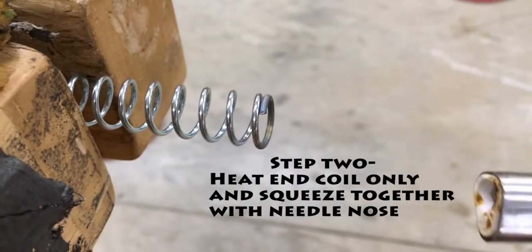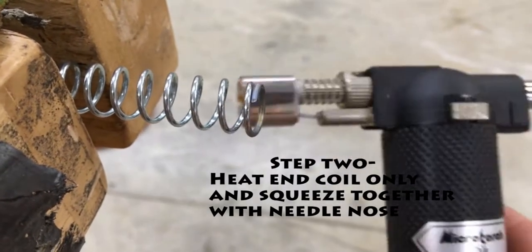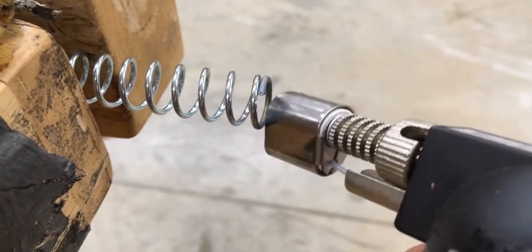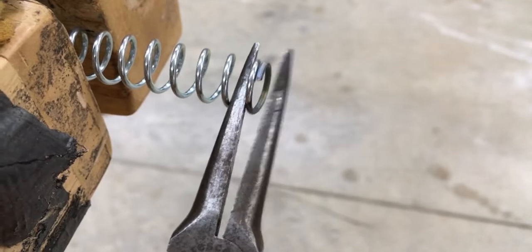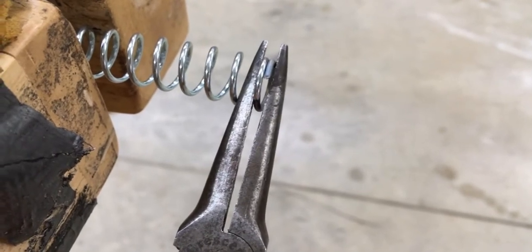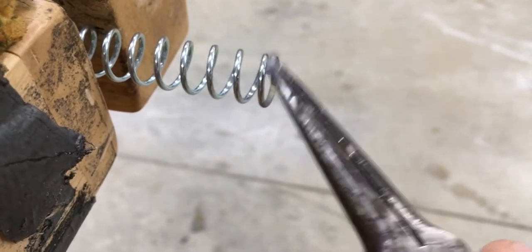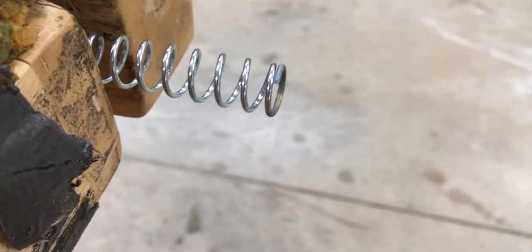It's not quite finished yet, but what I did was took a little handheld butane torch. I just heated this last coil right here up. And it wasn't a dull cherry red, but I just did it just enough to where I could squeeze this in with my needle nose. And then when I released it, the end stayed touching the second coil.